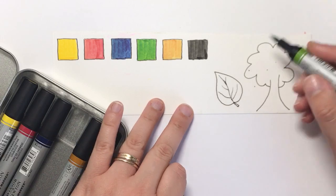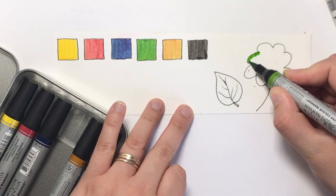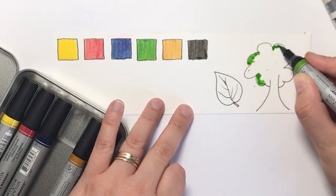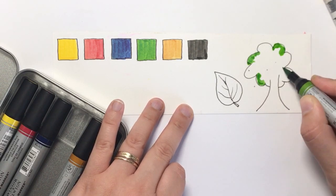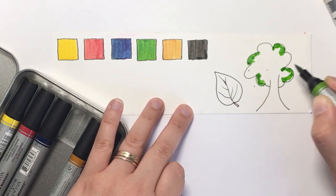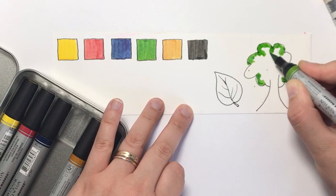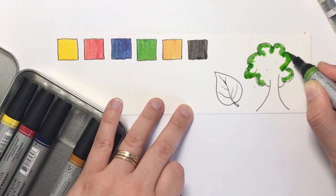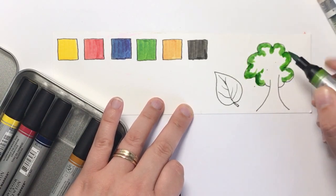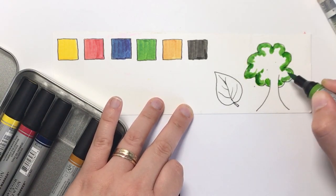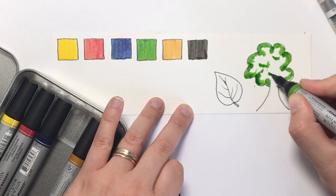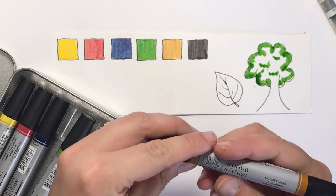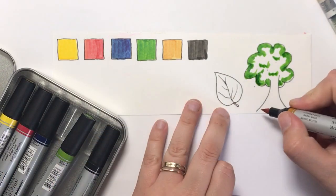What I'm going to do is pop some green on here just in different areas. I'm not being careful at all. Let's put a bit of this yellow ochre here.